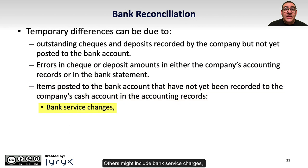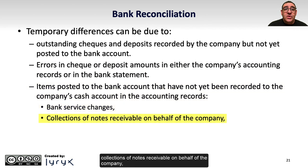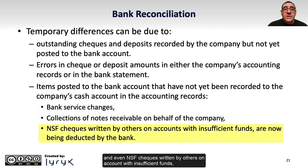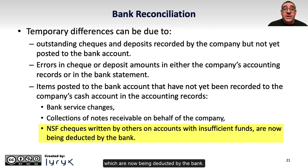Other sources of temporary differences might include bank service charges, collections of notes receivable on behalf of the company, and NSF checks written by others on accounts with insufficient funds, which are now being deducted by the bank.